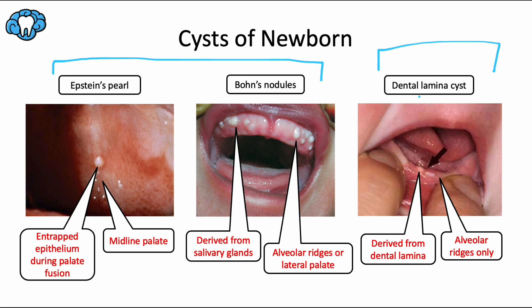These dental lamina cysts usually appear on the crest of the alveolar ridges above where the teeth are developing. All of these cysts are considered harmless and will spontaneously shed or rupture, eliminating the keratin contents within the first few weeks of life. As a result, these lesions are usually never seen after 3 months of age.